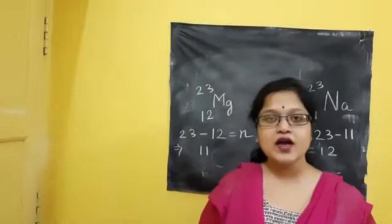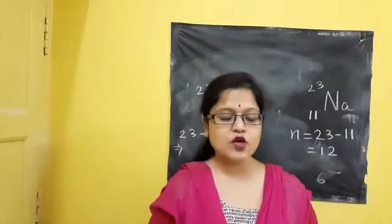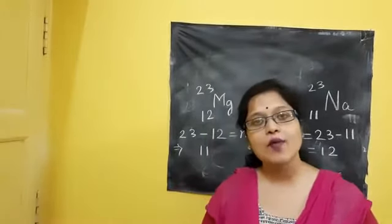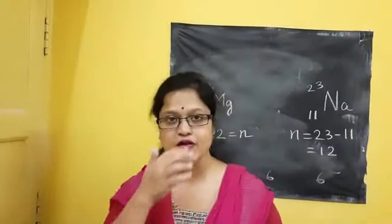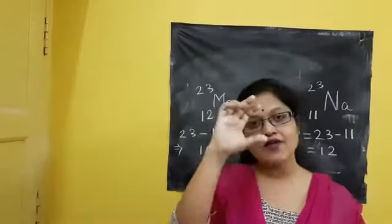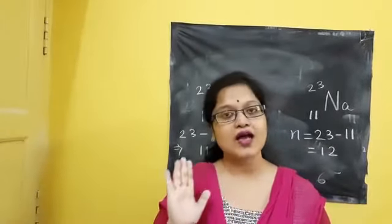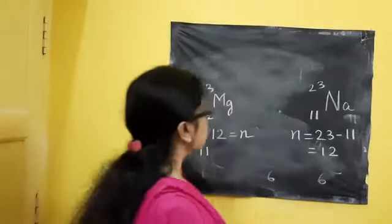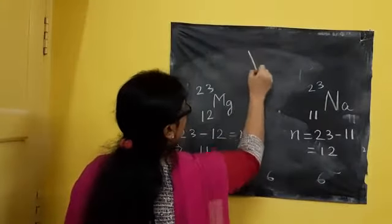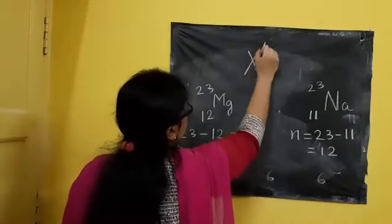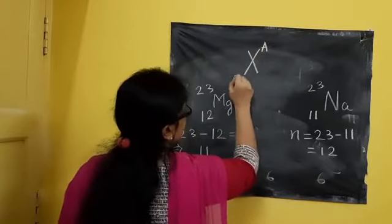Because in most cases, maximum radioactivity is all about neutron proton ratio. Suppose I am having an atom with its mass number and atomic number. This is its mass number, this is its atomic number.